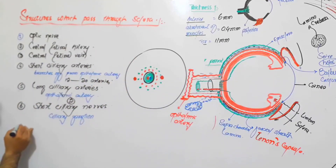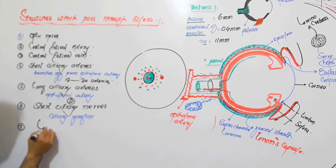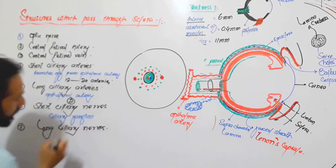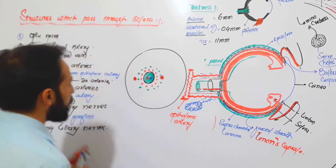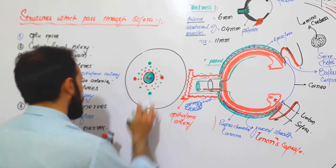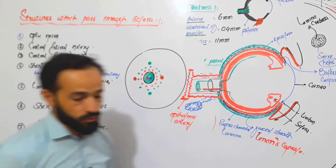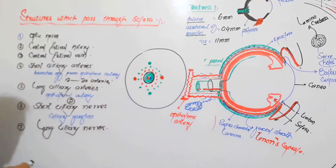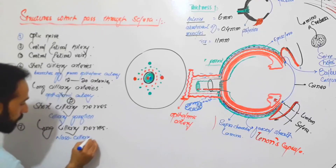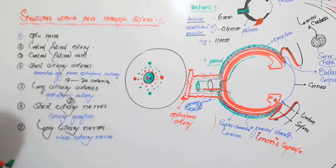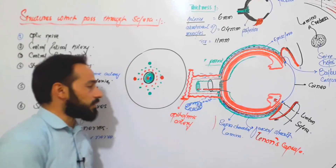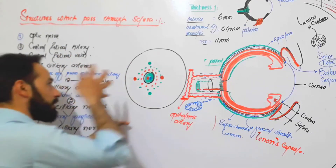Number seven are the long ciliary nerves, which also enter the eye by piercing the sclera. The long ciliary nerves are branches of the naso-ciliary nerve. This naso-ciliary nerve gives rise to the long ciliary nerves, which then enter the eye through the sclera.